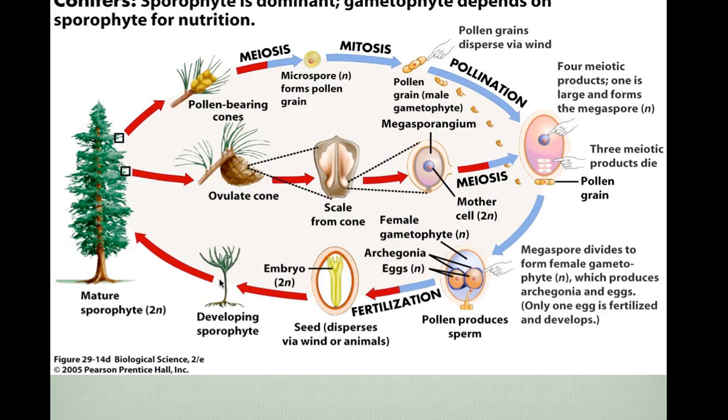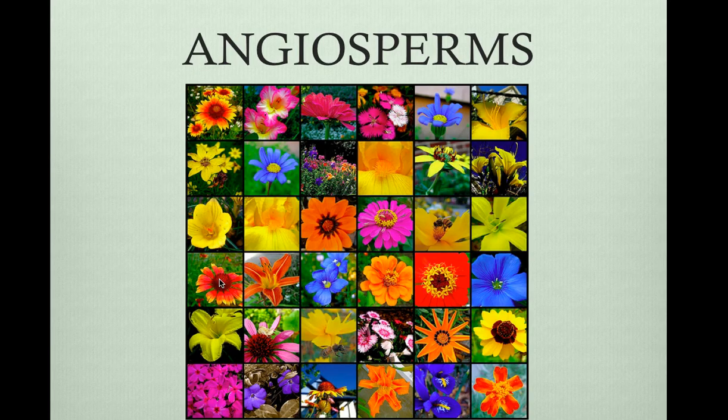Angiosperms are flowering plants. Their reproductive structures are the flowers and the fruit. They're the most diverse and widespread plants on the planet. There are 250,000 species, and there is only one phylum, Anthophyta. In the next podcast, we will go into detail about angiosperms.